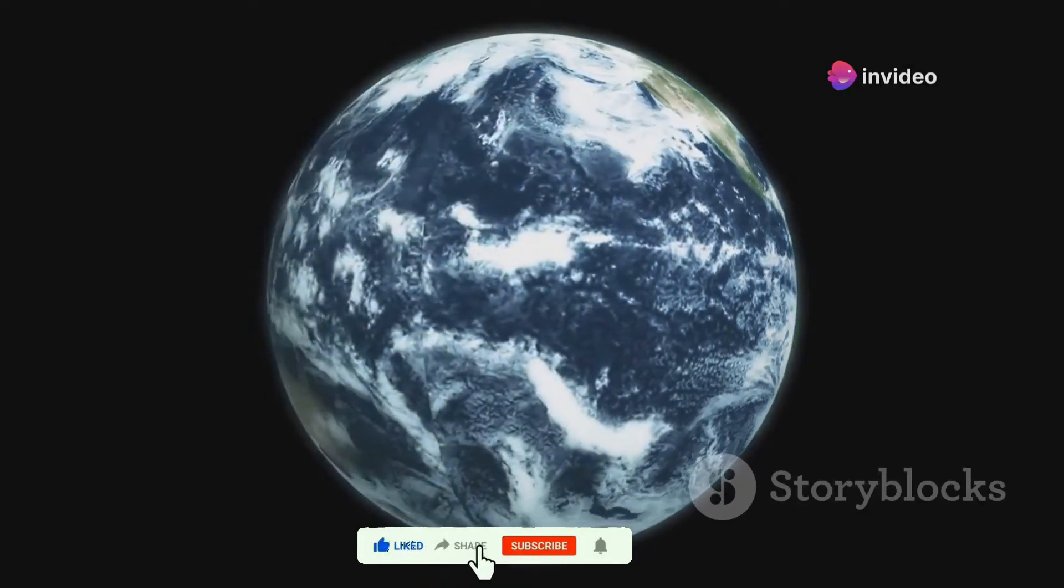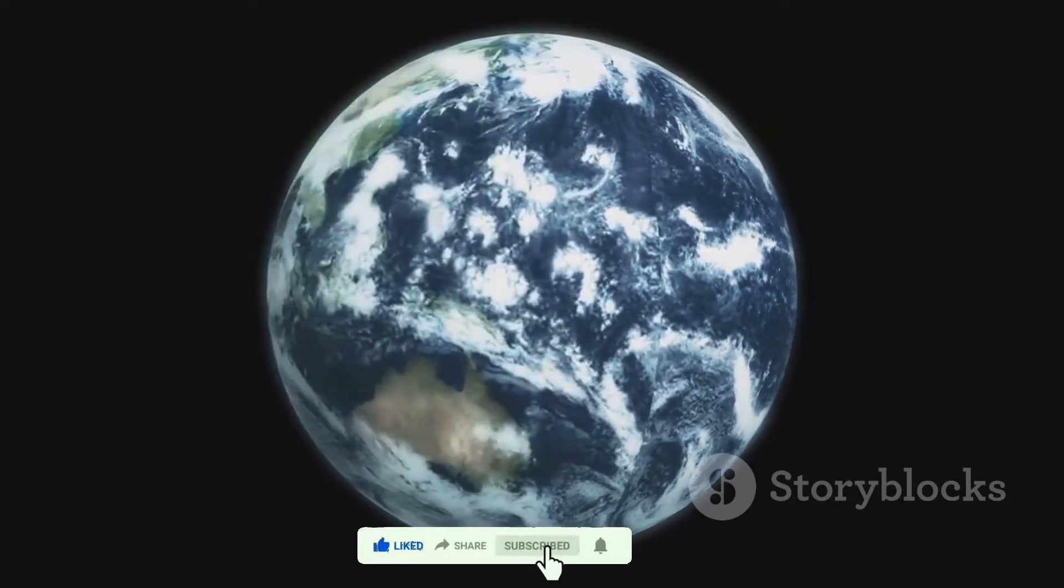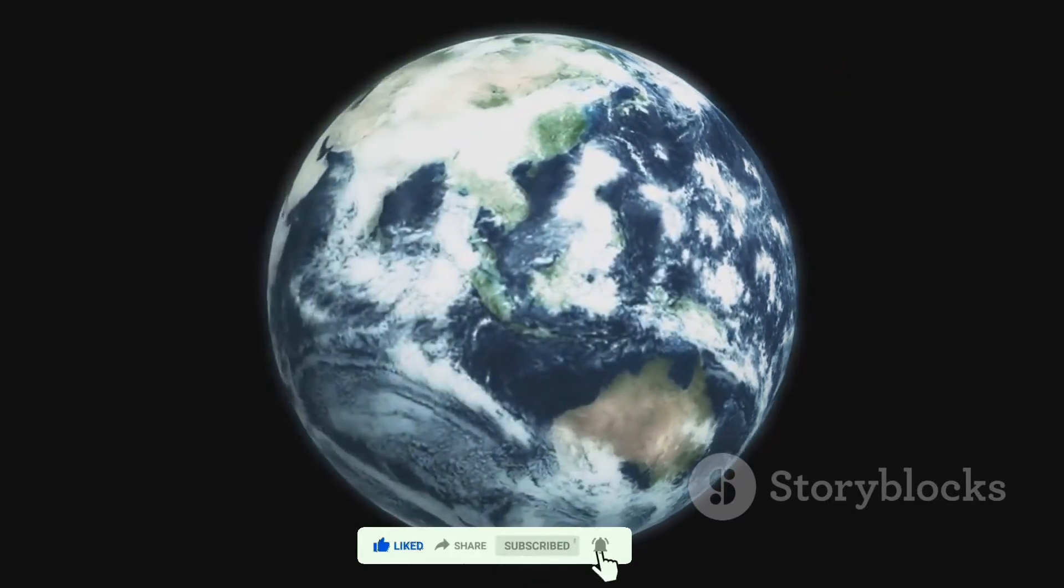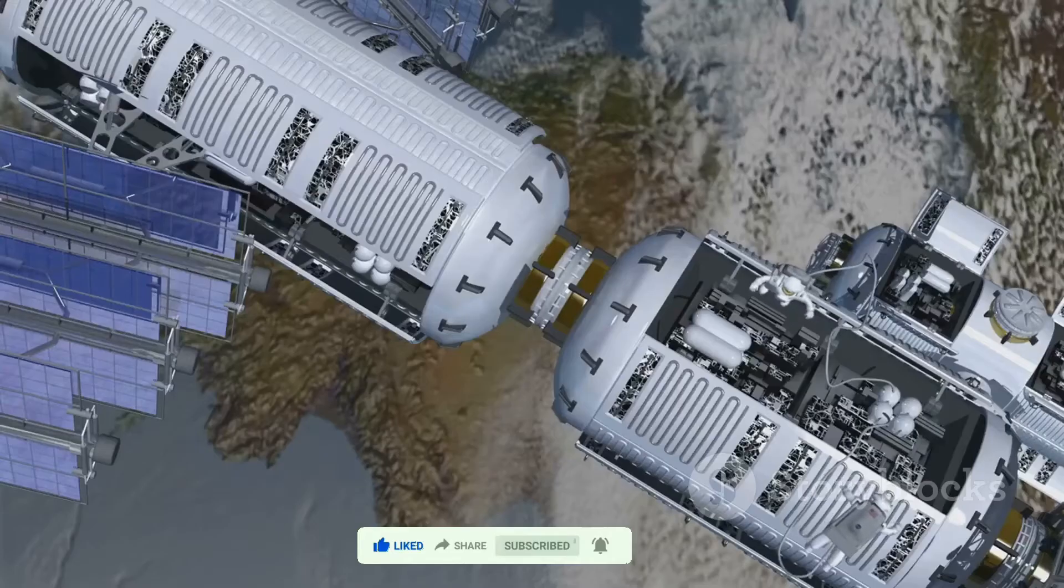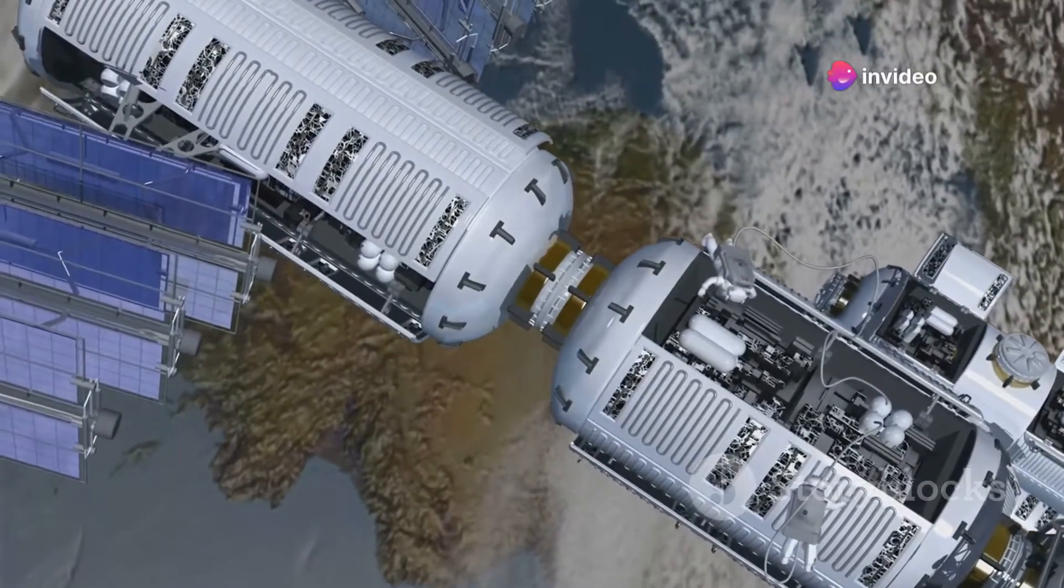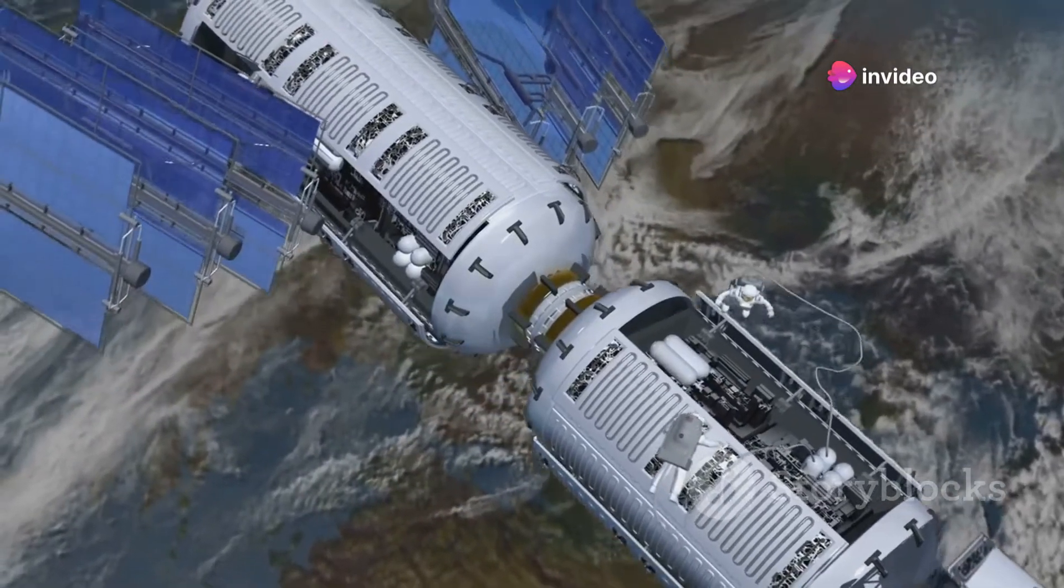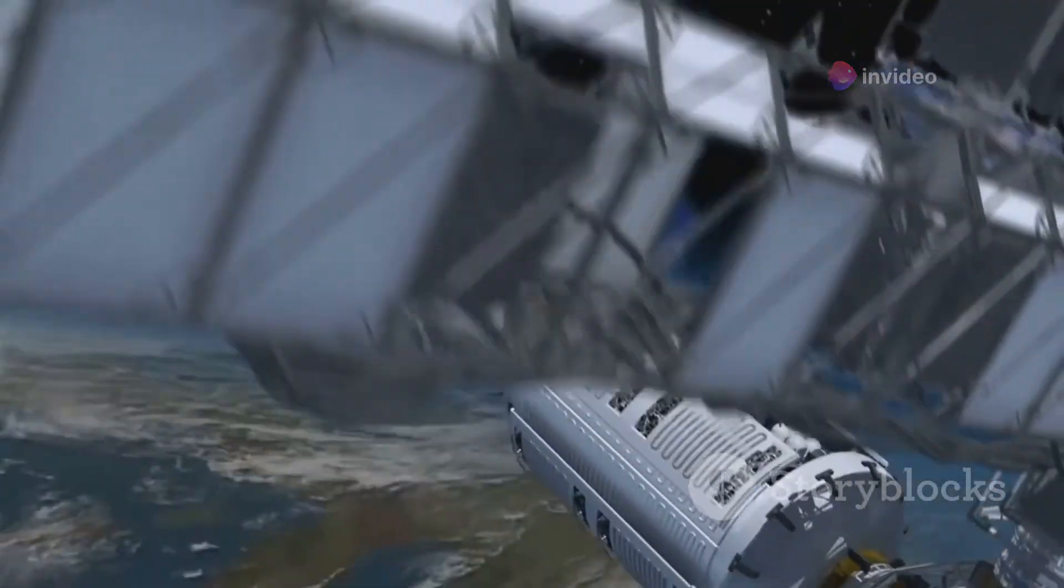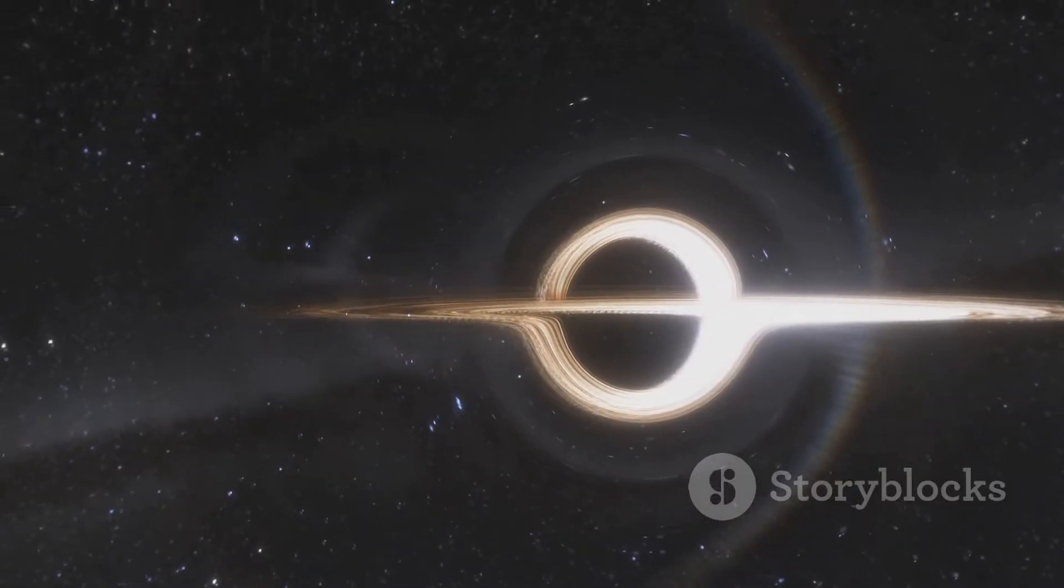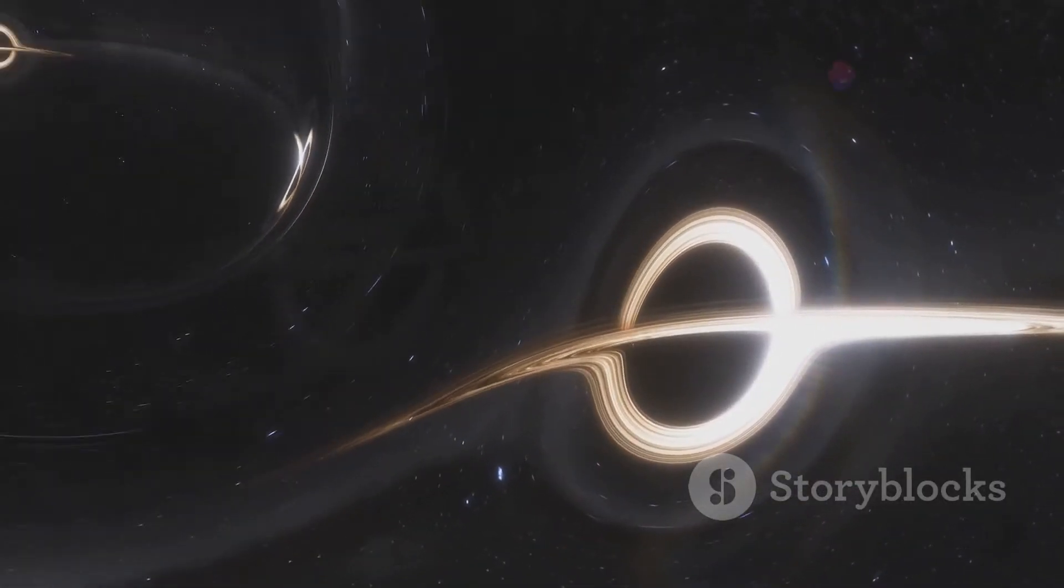On the surface, everything would weigh significantly more. A simple walk could feel like carrying weights and jumping would be nearly impossible. The architecture of our world would need a complete overhaul. Buildings would require much sturdier foundations to withstand the increased downward force. But the changes wouldn't stop at just heftier living conditions. The very structure of living organisms would need to adapt dramatically.